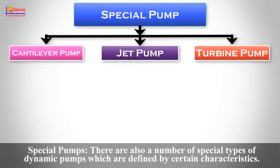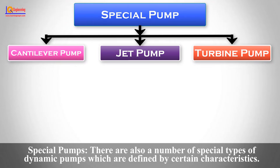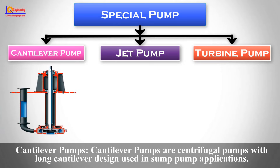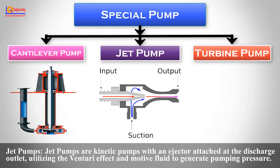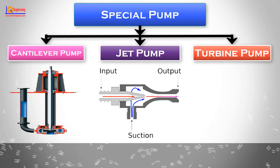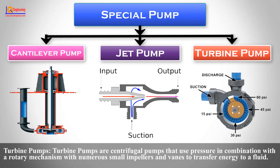There are also a number of special types of dynamic pumps defined by certain characteristics. Cantilever Pumps are centrifugal pumps with a long cantilever design used in some pump applications. Jet Pumps are kinetic pumps with an ejector attached at the discharge outlet, utilizing the venturi effect and motive fluid to generate pumping pressure. Turbine Pumps are centrifugal pumps that use pressure in combination with a rotary mechanism with numerous small impellers and vanes to transfer energy to fluid.